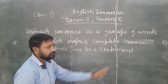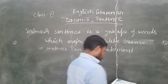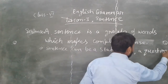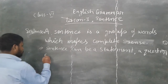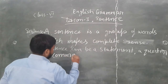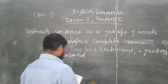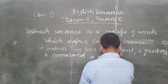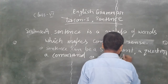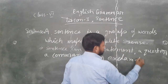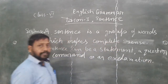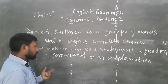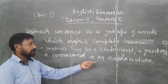Similarly, a sentence can be a statement, a question, a command, or an exclamation. A sentence can be these types — it could be a statement, it could be a question, it could be a command, it could be an exclamation.